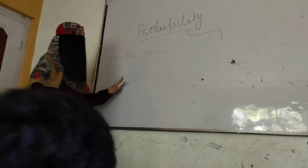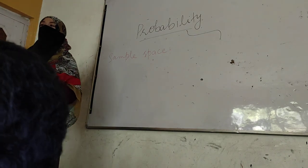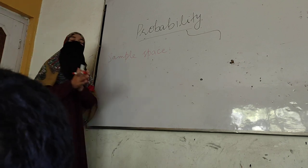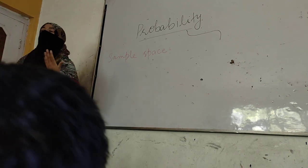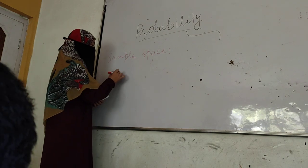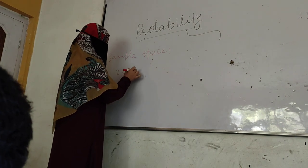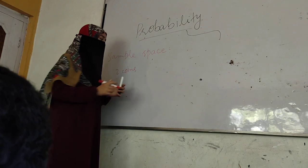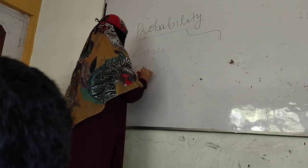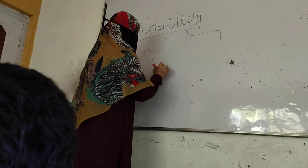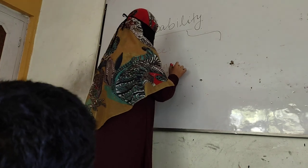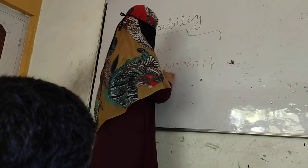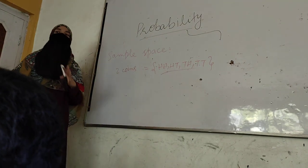Sample space means it is a set of all the possible outcomes. For example, if we toss two coins simultaneously, we will get the sample space: head-head, head-tail, tail-head, and tail-tail. That is the sample space when we toss two coins simultaneously.